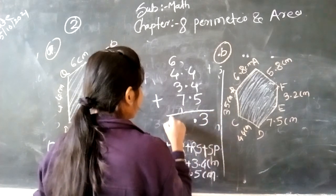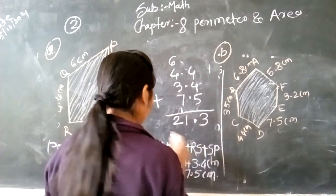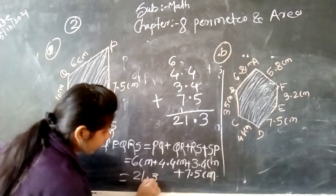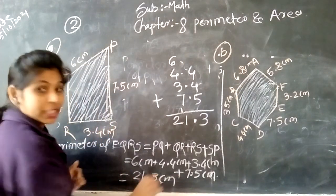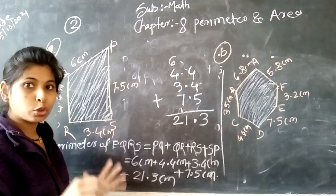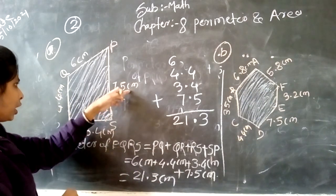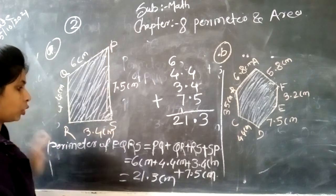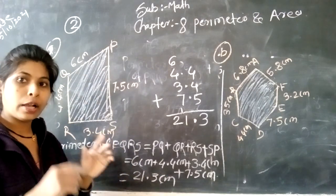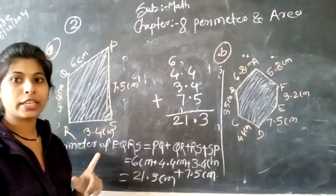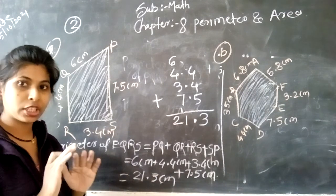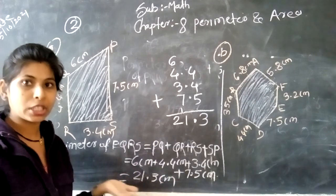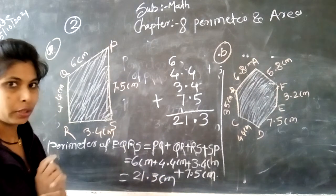So here we go, 21.3. So our answer is addition of all sides, 21.3 cm. This is centimeter, the unit length name is centimeter which we have given in the diagram. Here we have centimeter, here we have centimeter and here we have centimeter. So our unit is what? First we can find the calculation, addition of all sides, then we can write the unit centimeter.